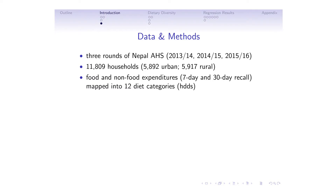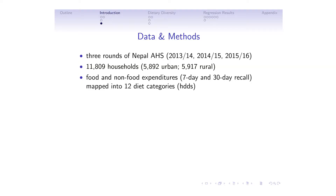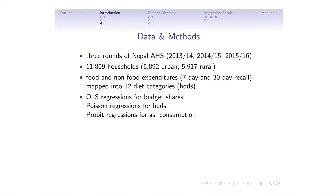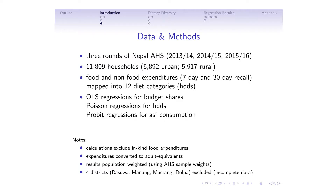We're looking at food and non-food expenditures. Food expenditures are based on seven-day recall. In the last seven days, a diet tends to be more diverse than in the last 24 hours, so capturing seven days of food expenditure gives us a picture of medium-range diversity within the household. We map the expenditures into 12 categories, which constitute the household dietary diversity score. We use a series of regressions matched to the data. Expenditures are converted to adult-equivalent units, and there are some districts not represented due to lack of information.